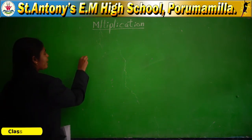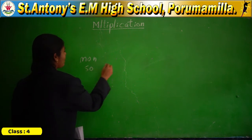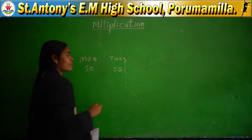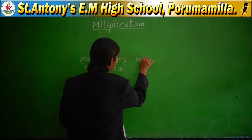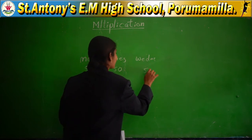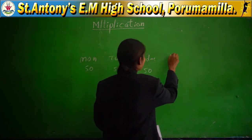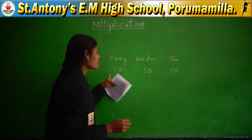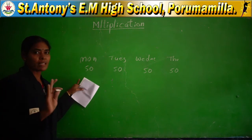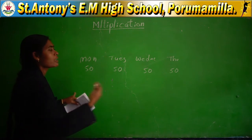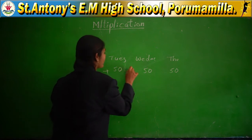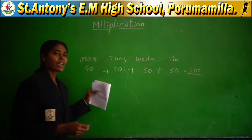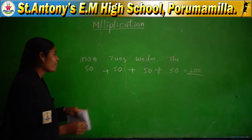Example: On Monday I brought 50 chocolates from the shop, Tuesday 50 chocolates, Wednesday 50 chocolates, and Thursday also 50 chocolates. Like this I brought 50 chocolates each day for 4 days continuously. How do I find the total? 50 plus 50 plus 50 plus 50 — the total will be 200. This addition we can do using a simpler method also.